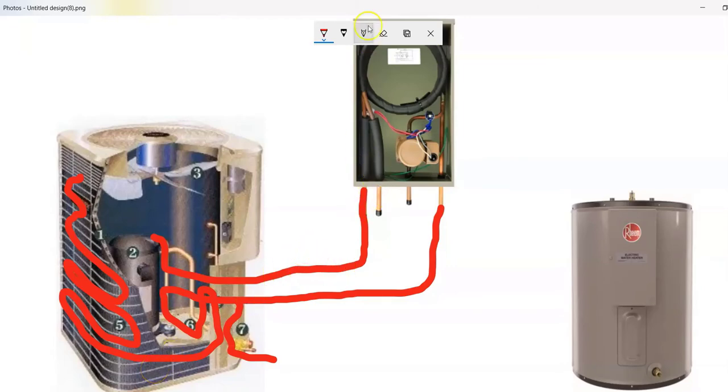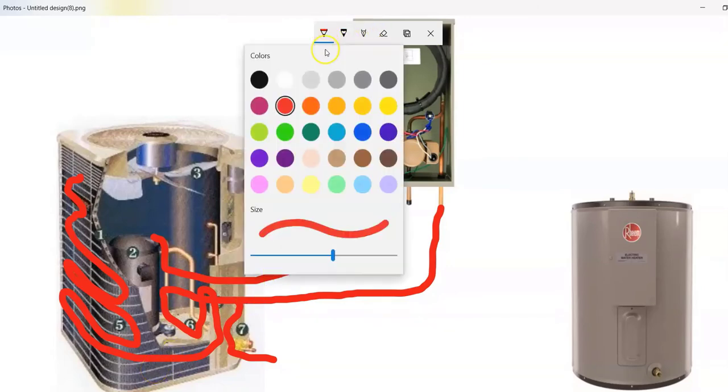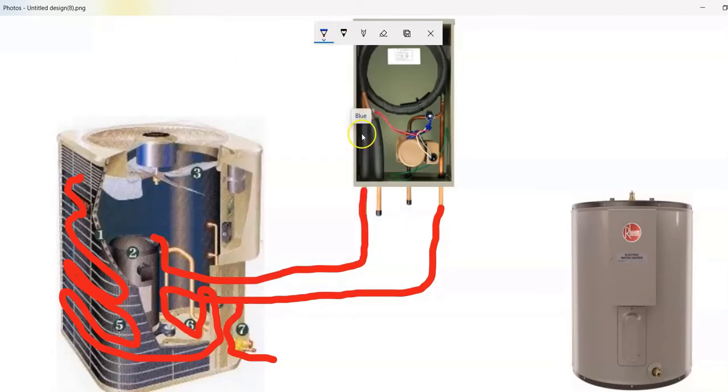On the water side what we do is we take cold water. Remember the cold water comes into your tank and the hot water basically goes out. So cold water from your city or well or water source into the tank and then it leaves to your house. So it comes in cold, it gets heated, and then it goes out to your house.